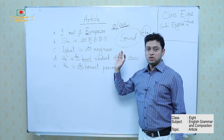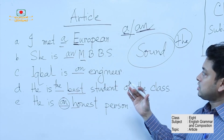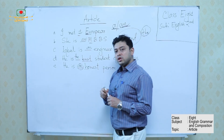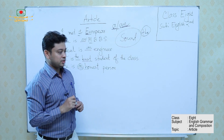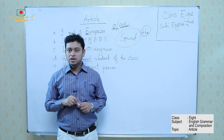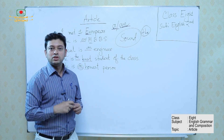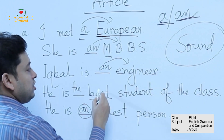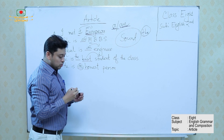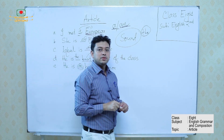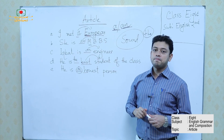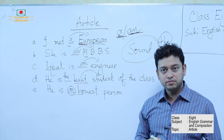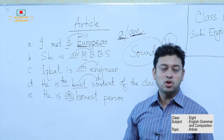We have discussed five rules from these five examples — very important and comparatively easy ones. Articles are parts of speech because each and every article actually qualifies a noun. That's why articles are classified as adjectives, because they qualify nouns. In modern English grammar, A, AN, and THE are also known as determiners. Now we will discuss some very important rules on articles.